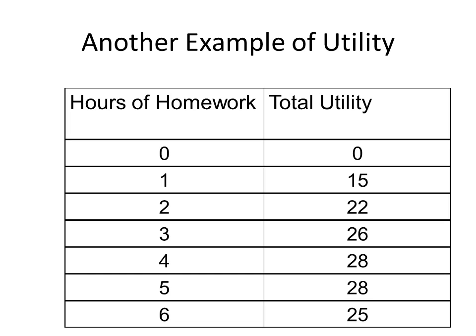Here is another example. A student studies or does homework for a certain number of hours per night or per week. Notice the amount of utility that he or she derives. When the person does zero hours of homework, they derive no utility. One hour gives them 15 utils. Two hours gives them 22. Three hours gives them 26. Four hours gives them 28. Five hours gives them 28. And six hours gives them 25.